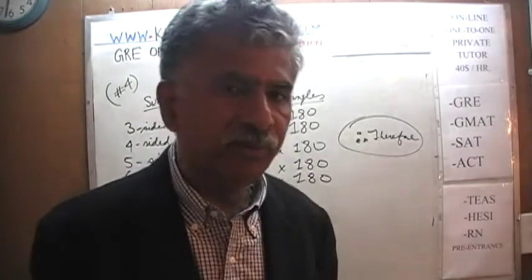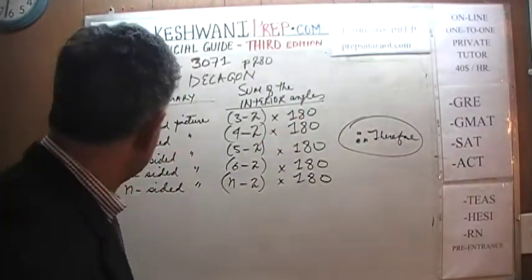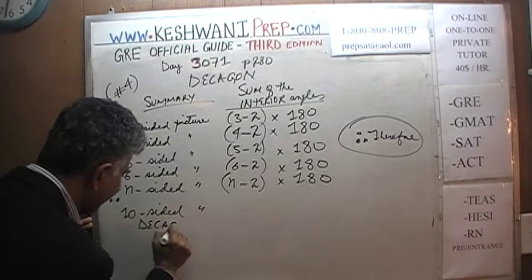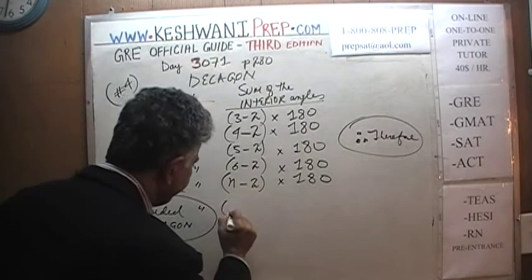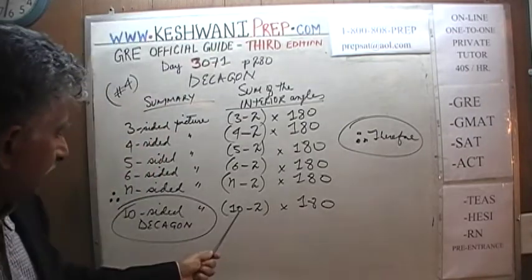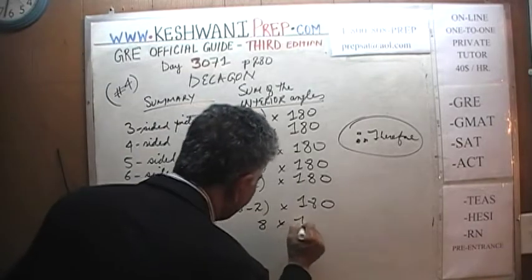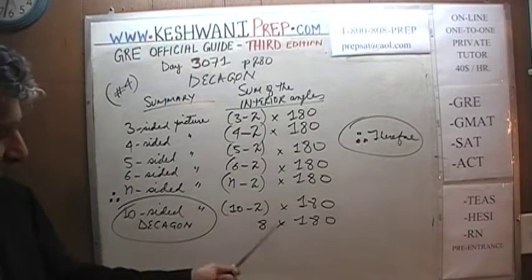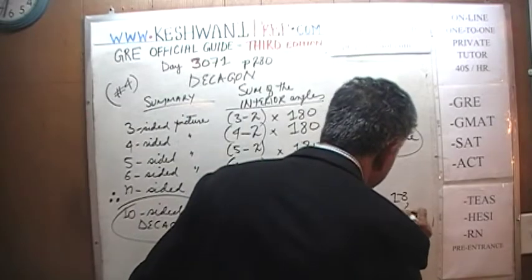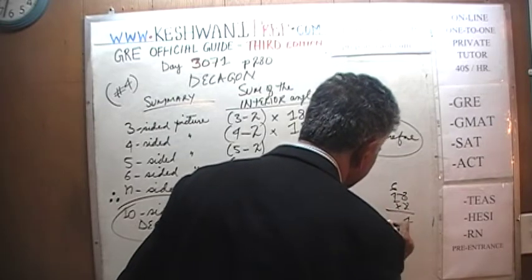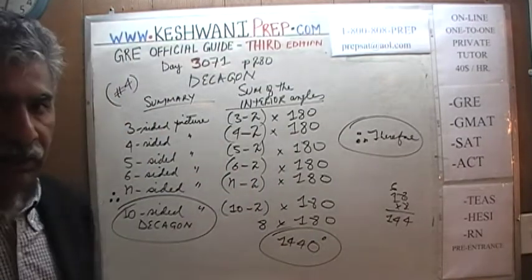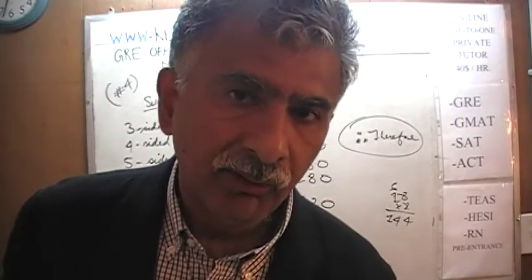We are interested in the sum of the interior angles of a decagon — a ten-sided picture. That would simply be (10−2)×180 = 8×180. Eight times 18 is 144, carry the six — that's 1440. So the sum of the interior angles of a decagon is one thousand four hundred and forty degrees.